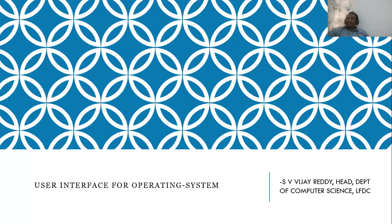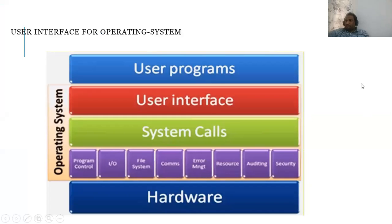Today we'll start with the next topic: user interface for operating systems. In the previous class we completed the services of the operating system. When we come to the concept of operating system, we have user interface, system calls, and various services like program controls, input/output control, file systems, communications, error management, resources, and security. Next, we have user interface and system calls.